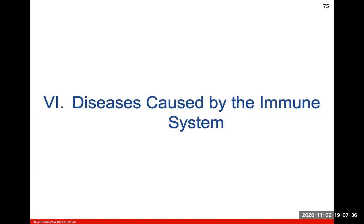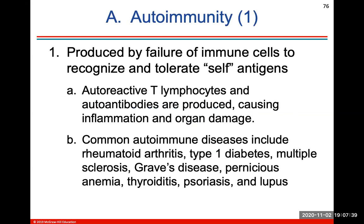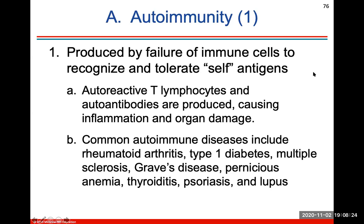Disease caused by the immune system: autoimmunity is produced by failure of immune cells to recognize and tolerate self-antigens. Auto-reactive T lymphocytes and auto-antibodies will be produced, causing inflammation and organ damage. Common autoimmune diseases include rheumatoid arthritis, type 1 diabetes, multiple sclerosis, Graves disease, pernicious anemia, thyroiditis, psoriasis, and lupus. In these diseases, the immune system doesn't recognize itself anymore and begins to kill off its own cells.